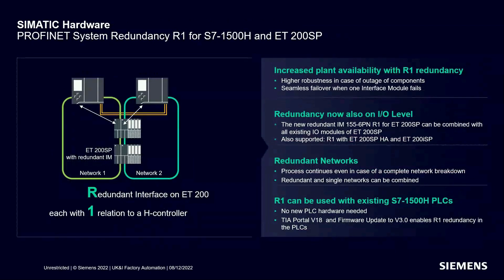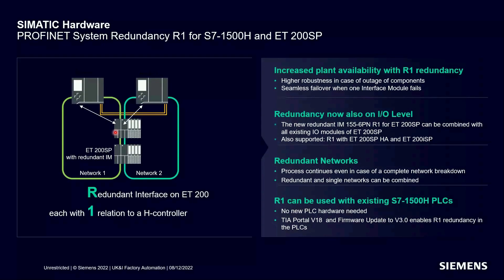Another exciting improvement is R1 redundancy for the S7-1500H. If you already have a 1500H, you can simply upgrade the firmware to version 3 to take advantage of the new features — no hardware changes required. This new capability uses a dual interface module arrangement, with one interface module reporting to the first CPU and the second to the second CPU, along the lines of traditional MRP-style networks.